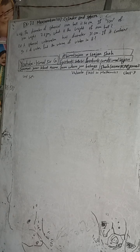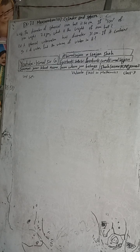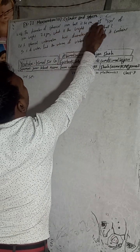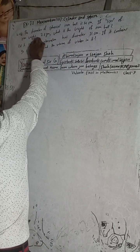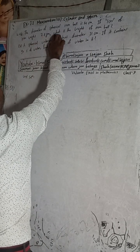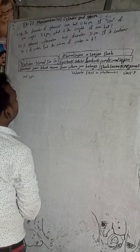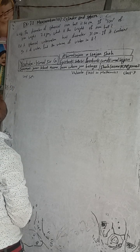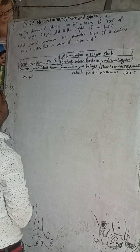Class 9 and 10 students, welcome back to Vimal Sarji YouTube channel. This is question number 4a, exercise 7.2, mensuration third part — cylinder and sphere, Vedant Excel in Mathematics Class 9. The question is: the diameter of a spherical iron ball is 14 cm. If 1 cm cube of iron weighs 7.8 grams, what is the weight of the iron ball?